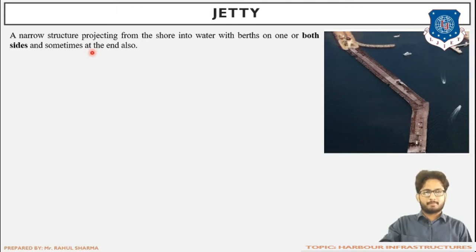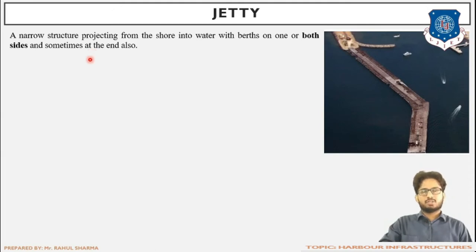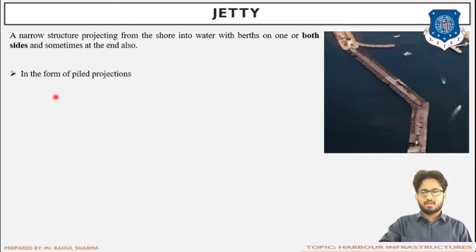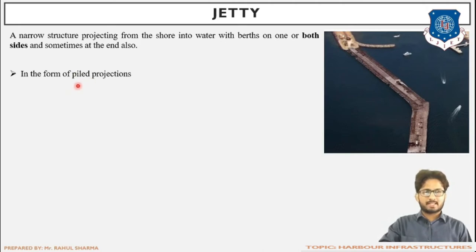The jetty is perpendicular or inclined to the shore and is basically used for handling petroleum products — that is, crude oil or various low-cargo petroleum products. It is in the form of a piled projection, that is, end bearing piles are used, which we will learn about in further detail in the upcoming slides.